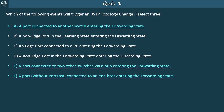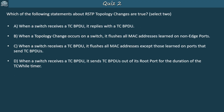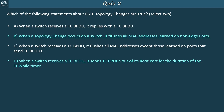Quiz question 2: which of the following statements about RSTP topology changes are true? Select 2. The answers are B and D. A is incorrect because when a switch receives a TC BPDU, it doesn't reply with a TC BPDU; instead, it sends TC BPDUs out of all its non-edge designated ports and its root port, except for the port that received the TC BPDU. C is incorrect because when a switch receives a TC BPDU, it flushes all MAC addresses learned on non-edge ports except the port that received the TC BPDU — not those learned on ports that send TC BPDUs.